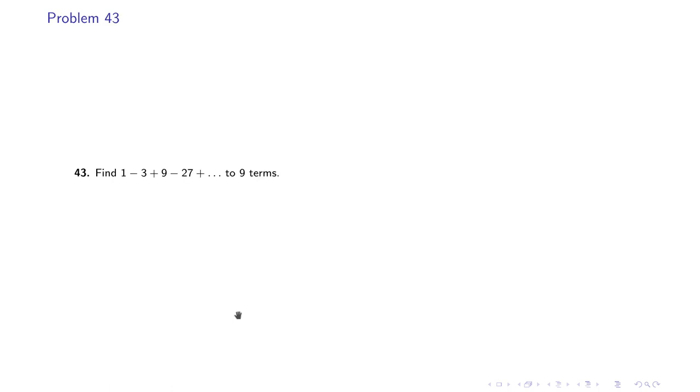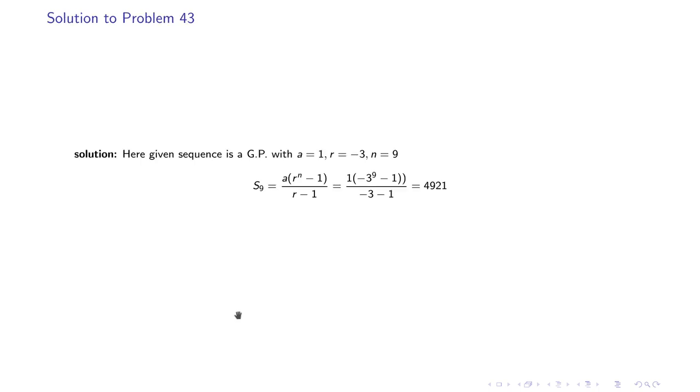Problem number 43 says that find 1 - 3 + 9 - 27 and so on to 9 terms. In this case, first term is 1 and common ratio is -3 as you can observe. So S_9 would be ((-3)^9 - 1)/(-3 - 1). Sorry, there is one extra parenthesis there. So denominator is -4 and we compute the numerator to get the result as 4921.